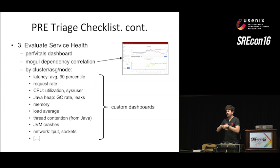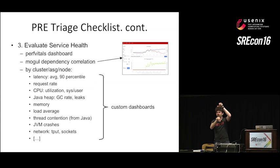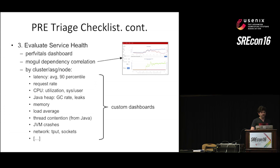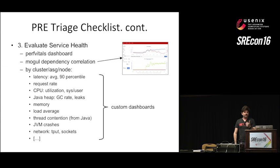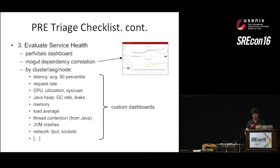Mogul tells you, out of the thousands of metrics we're collecting, which metrics closely match the error rate. Quickly you can say, 'Oh, that service is connected to this service, and I didn't know that.' Mogul can be pretty helpful — we usually kick it off and then do something else because it can take a minute to come back as it thinks. Then we look at various cluster, ASG, and node type metrics: latency averages, 90th percentile, other percentiles, request rate, and so on. Custom dashboards show us that in a hurry.